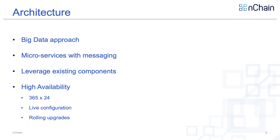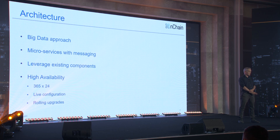The architecture for Terranode takes a big data approach — not a monolithic system, but microservices with messaging between them. Each service accomplishes a very specific task, and each service can run as multiple instances to spread the load. We will be leveraging existing components; for example, a transaction store will use existing databases where possible. It's designed for high availability — not just 24/7, but all year round — with rolling upgrades and live configuration. This software is designed to never go down.